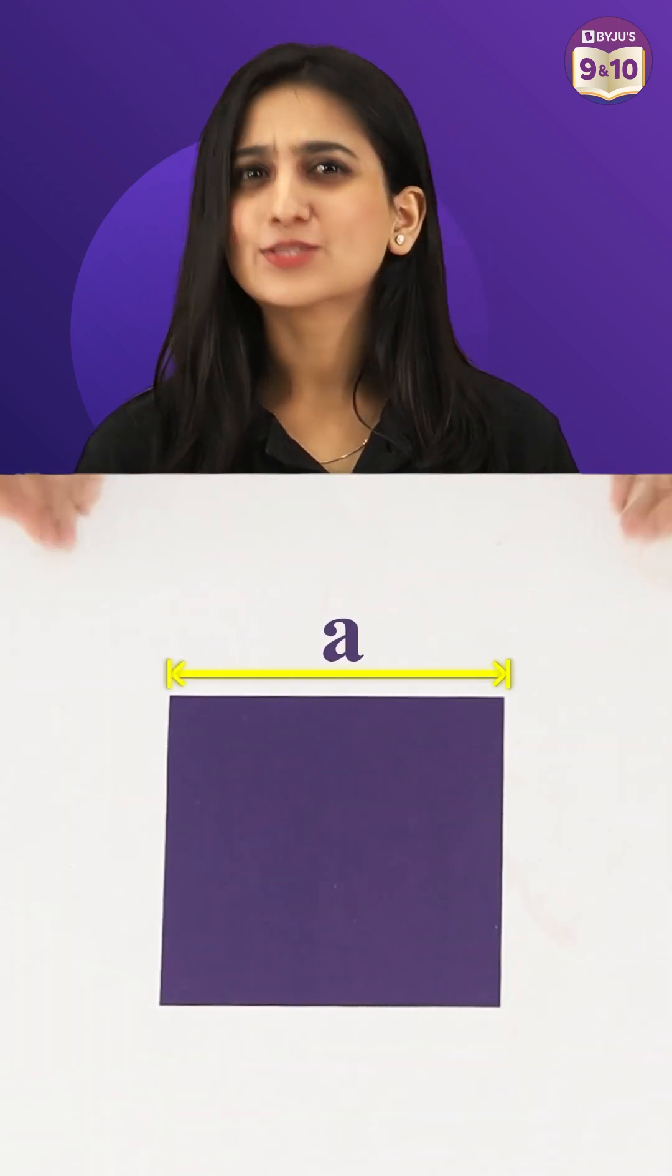Look at this square. Let's say the side length is A. So we can say that the area of the square is A square.